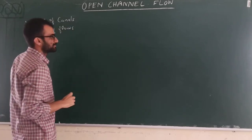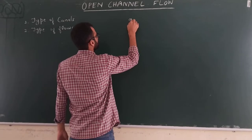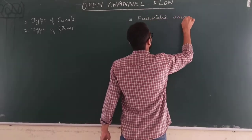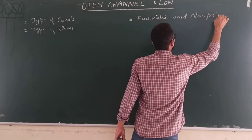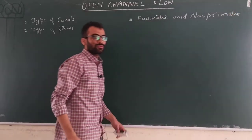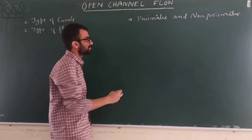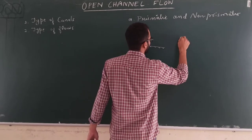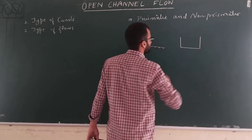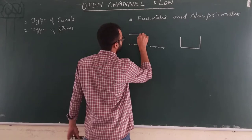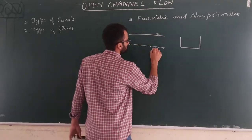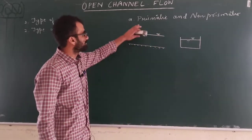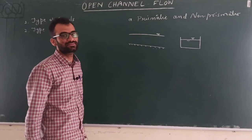Canals can be classified as prismatic and non-prismatic. What is the meaning of prismatic channel and non-prismatic channel? Suppose we have a channel or canal with a rectangular cross section and water is flowing in it. This canal is called a prismatic canal when the geometry and slope of this channel does not change.